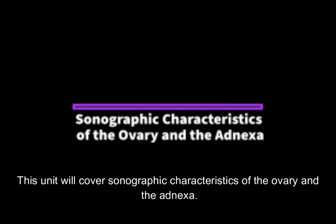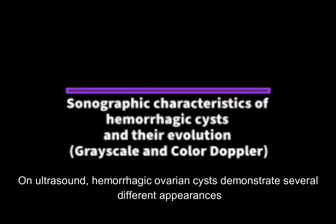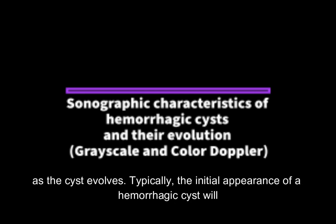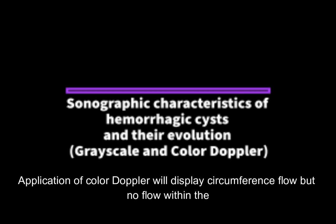This unit will cover sonographic characteristics of the ovary and the adnexa. On ultrasound, hemorrhagic ovarian cysts demonstrate several different appearances as the cyst evolves. Typically, the initial appearance of a hemorrhagic cyst will demonstrate a smooth wall with anechoic interior echoes and posterior acoustic enhancement. Application of color Doppler will display circumferential flow but no flow within the cyst itself.